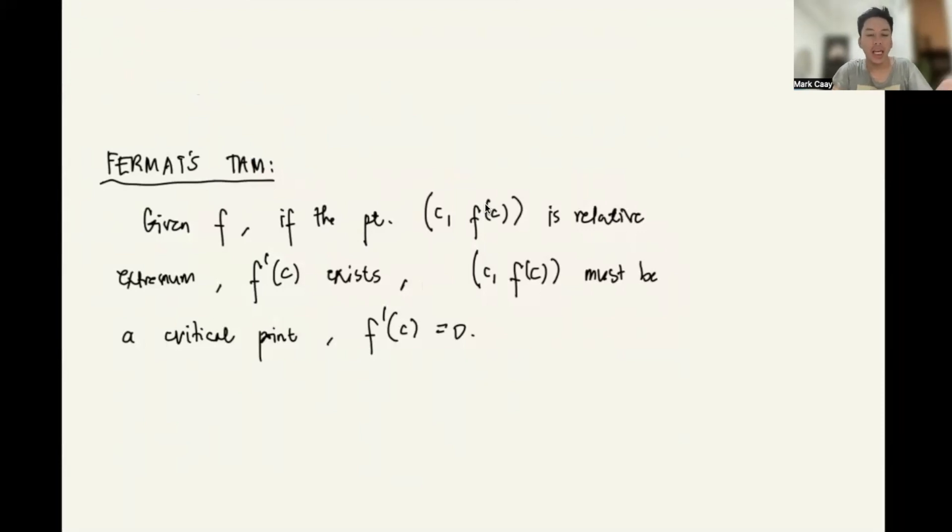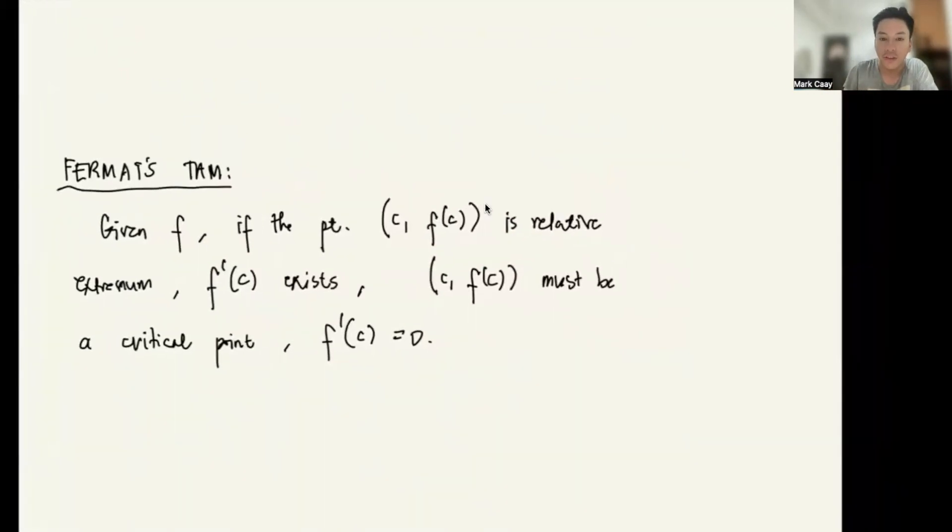To start with, let's consider first the Fermat's theorem for differentiability. It says that given a function f, if the point c, f(c) is a relative extremum and f'(c) exists, then this point which is considered as the relative extremum must be a critical point and f'(c) equals zero. That's according to Fermat's theorem for differentiability.